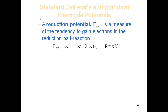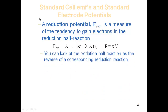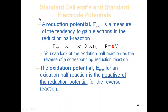A reduction potential measures the tendency to gain electrons in a reduction half-reaction. For example, A⁺ + e⁻ → A(s) has some voltage X associated with it. The oxidation potential for the reverse reaction (A(s) → A⁺ + e⁻) is the negative of that reduction potential, −X. So if you want the oxidation potential, flip the reaction and change the sign. This is analogous to taking 1/K when you flip an equilibrium reaction, or changing the sign of ΔH.